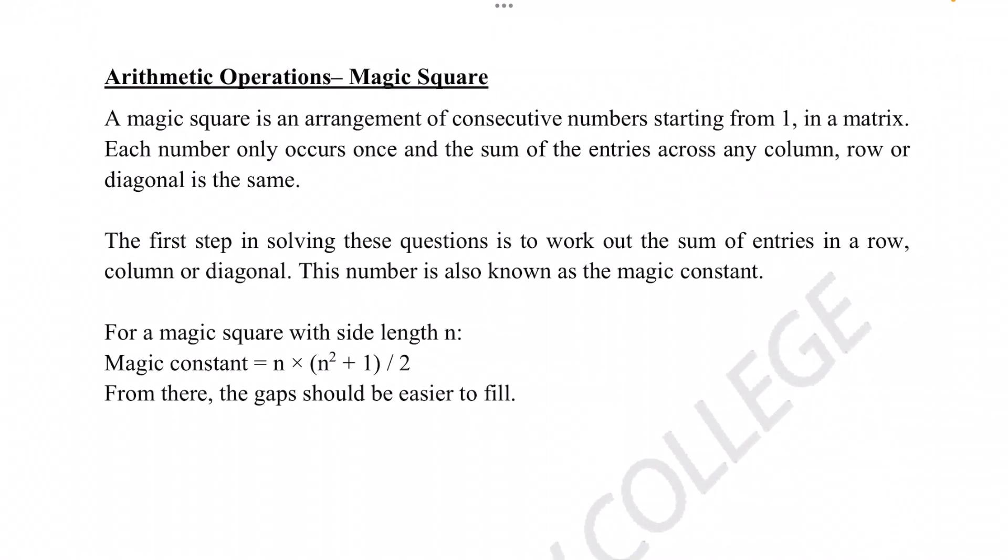A magic square is an arrangement of consecutive numbers starting from 1 in a matrix. Each number only occurs once and the sum of the entries across any column, row or diagonal is the same.